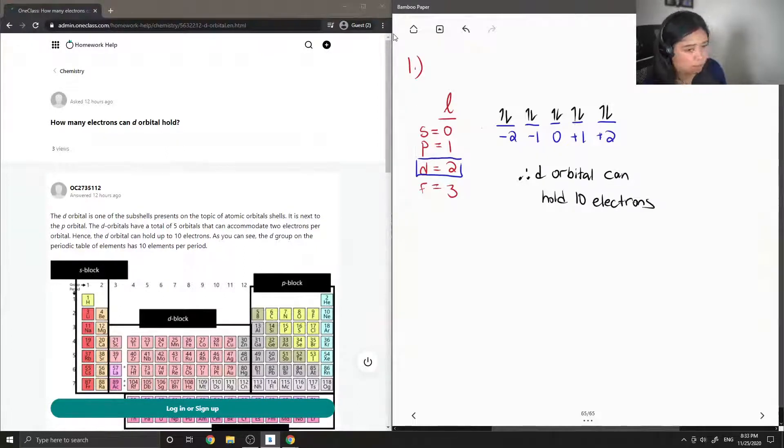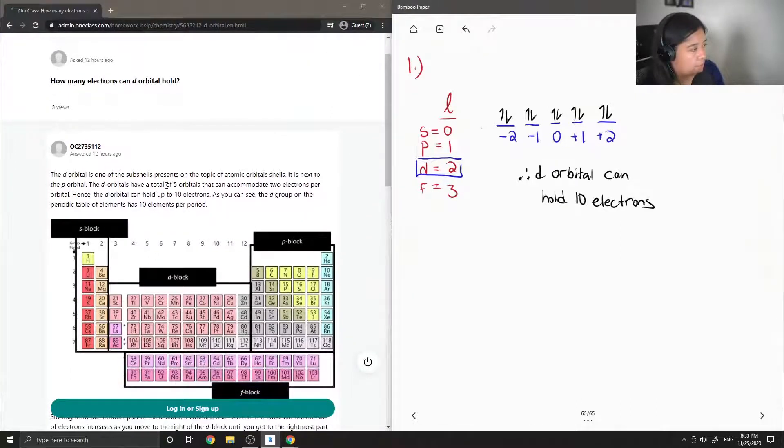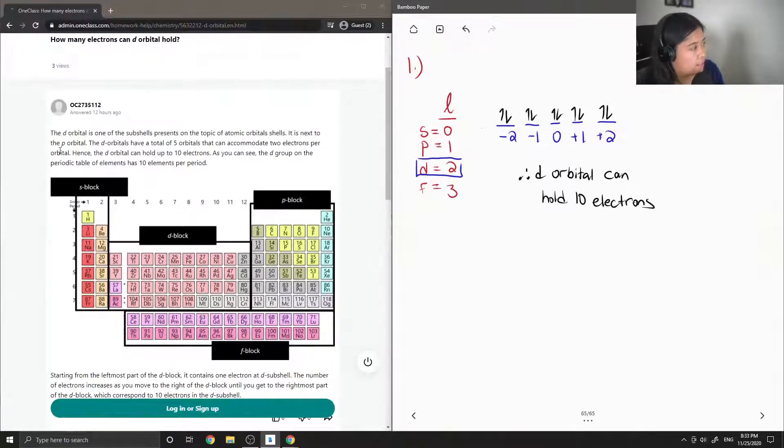Okay, so let's see what the junior tutor said. D orbital is one of the subshells present on the topic of atomic orbital shells. It is next to the p orbital. D orbitals have a total of 5 orbitals that can accommodate 2 electrons per orbital. Hence the d orbital can hold up to 10 electrons.